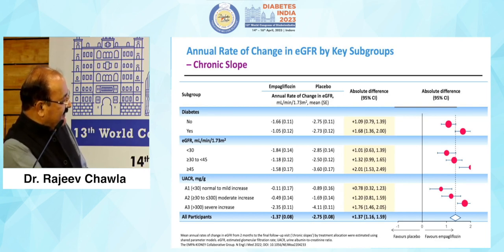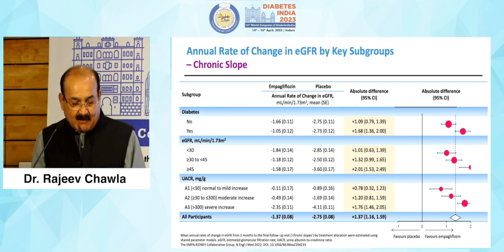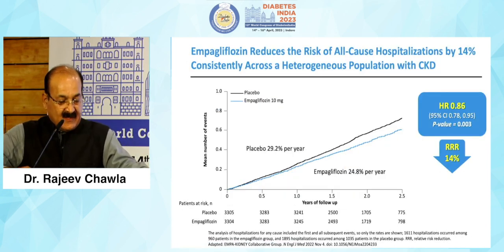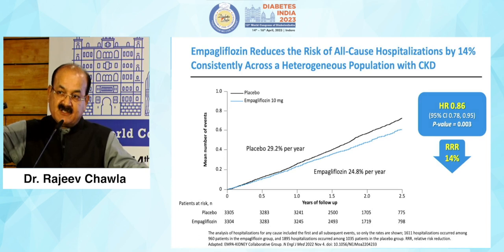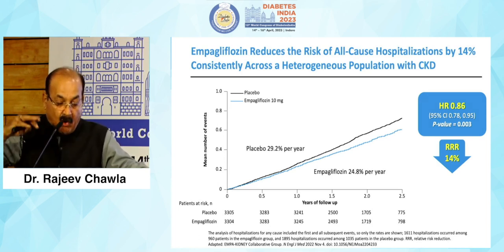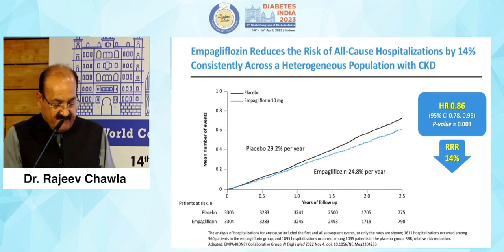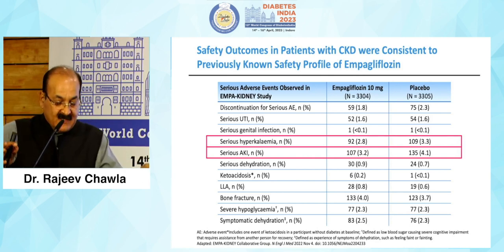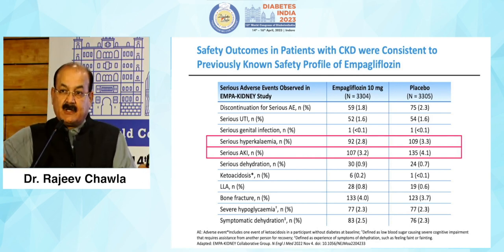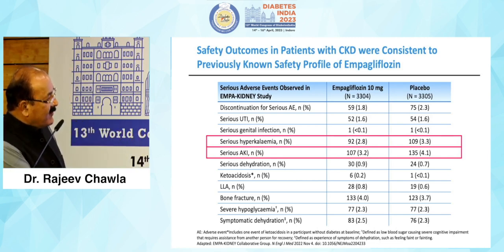The chronic slope is important — type 2 diabetes patients with DKD tend to gradually lose eGFR, with a reduction of about 5 percent over the year. This chronic slope gets flattened on a drug like empagliflozin. That chronic slope favors usage of empagliflozin irrespective of your diabetes status, eGFR level, or albumin-creatinine ratio — all participants across subgroups had better outcomes on empagliflozin 10 milligram versus placebo.